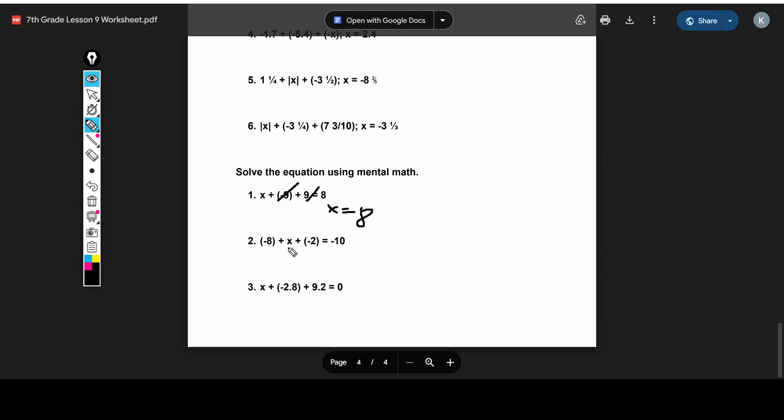For this next one, negative 8 plus x plus negative 2 equals negative 10. Well, negative 8 and negative 2 combine to be negative 10, which means that they cancel out with this side on the other one, which means x just equals 0.